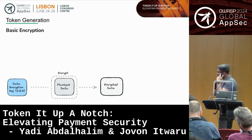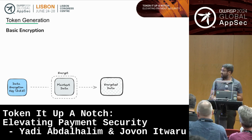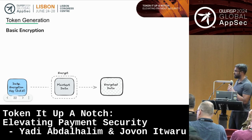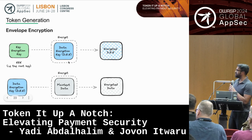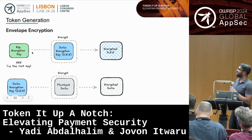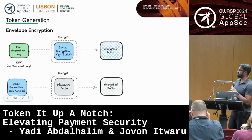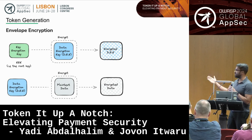With envelope encryption, we have our token — in our case it's a PAN, but it could also be a social security number or national identifier. We take a data key, use AES, and encrypt the data to get encrypted data. But we also have a parent key or root key — the key encryption key — that protects the data key, giving us an encrypted data key and encrypted data. These two pieces get stored in our database. This encryption key is the keys to the kingdom: if it gets lost, it could decrypt any of the data encryption keys.